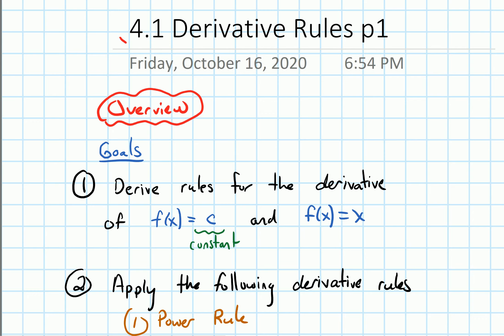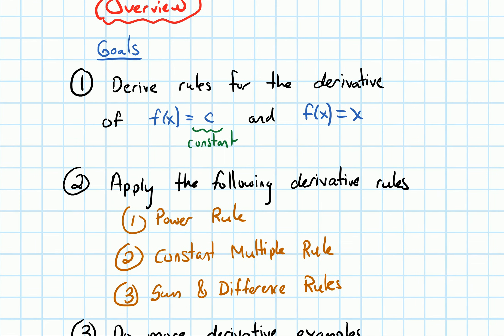Our goals for this section are: we will first derive some rules for the derivative of f of x equals c, where c is a constant, that means it's just some fixed number, and f of x equals x.